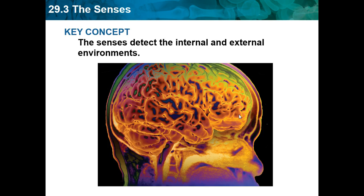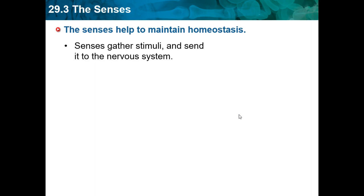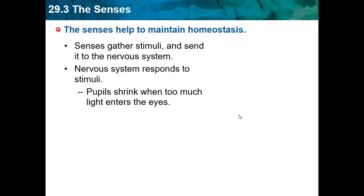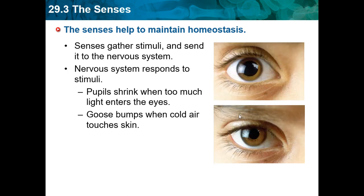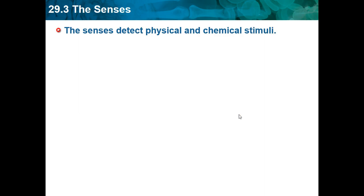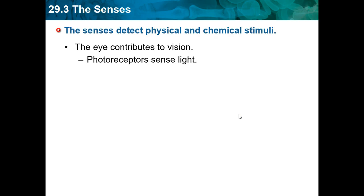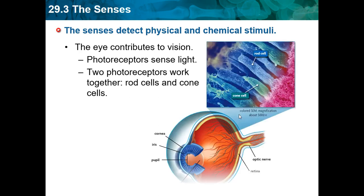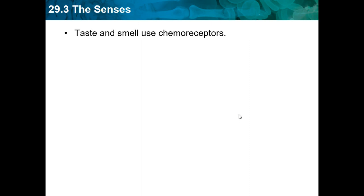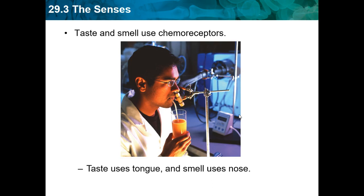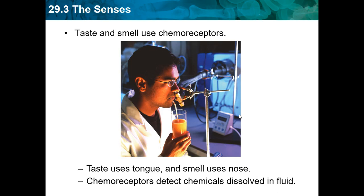These neurotransmitters stimulate the next cell over. A key concept is that senses detect the internal and external environments to help maintain homeostasis. Senses gather stimuli and send them to the nervous system, which then responds. For example, pupils shrink when there's bright light, and goosebumps occur when cold air touches the skin. The eye contributes to vision using photoreceptors — rods and cones work together. The ear contributes to hearing. Taste and smell use chemoreceptors; taste uses the tongue and smell uses the nose.